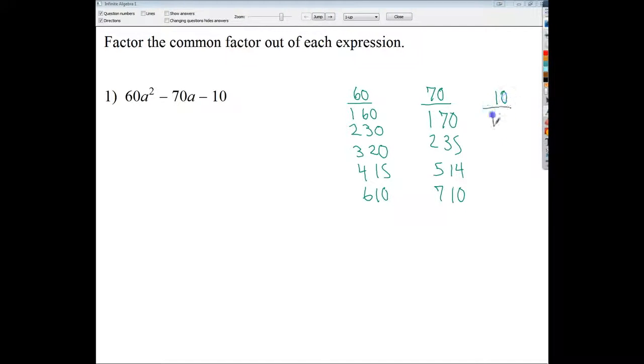70 divided by 7 is 7 and 10. 8 doesn't work, 9 doesn't work. And 10, of course, will be 1, 10, 2, 5 and that's it. Now, I need to find the greatest common factor so they all have a 10 in them. And for me, the best move always is to start out to see if the 10, the smallest number goes into the big ones. Which in this case, it would have. It would have been way easier for me to do it that way.